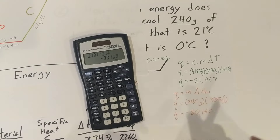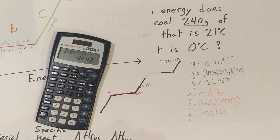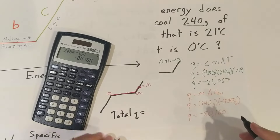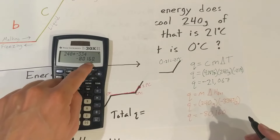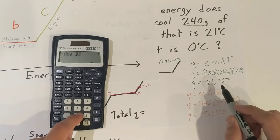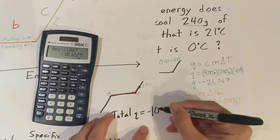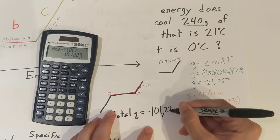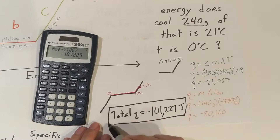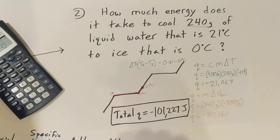Now we just have to add these two numbers together to get our total Q. Total Q equals negative 80,160 plus negative 21,067, which gives us negative 101,227 joules. So that's how we answer question number two — that is the total energy it takes for 240 grams of water at 21 degrees to become ice at zero degrees.